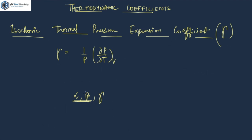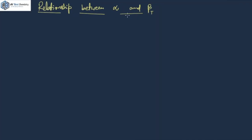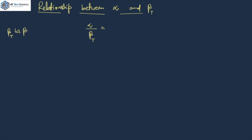There is a relation between alpha and beta which you all should know, and from which questions have been asked. Let's talk about the relationship between alpha and beta T. Alpha is the thermal expansion coefficient and beta T is the isothermal compressibility factor, and there is a relationship between both of them. The direct relation is that alpha upon beta T equals del P by del T at constant V. I will be writing beta T simply as beta for the rest of the explanation — just referring to the isothermal compressibility factor, not the adiabatic one.